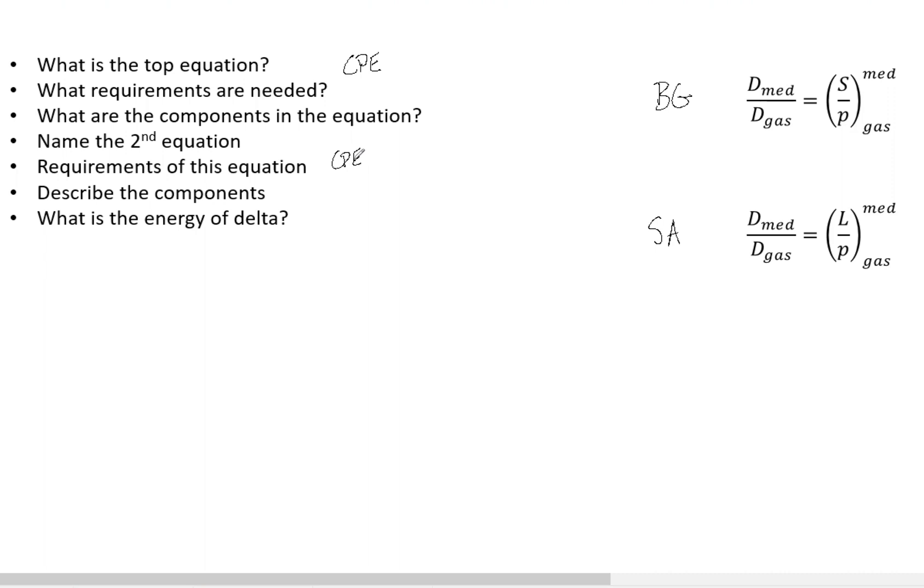Now slow electrons, which are below an energy, the delta symbol. So delta is the cutoff energy. Slow electrons deposit energy where they're created.